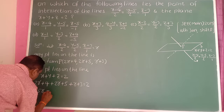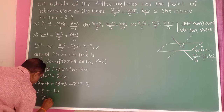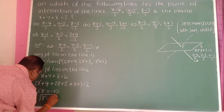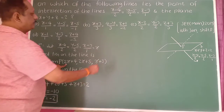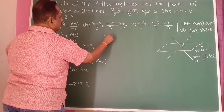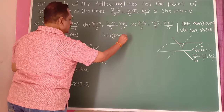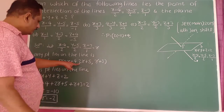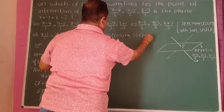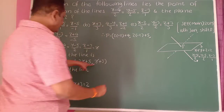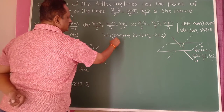Taking 12 to the right hand side gives 5R equals 1 minus 12, which is minus 11. So R equals minus 2. Now substitute R = minus 2 to find point P. So x = 2 into minus 2 plus 4.